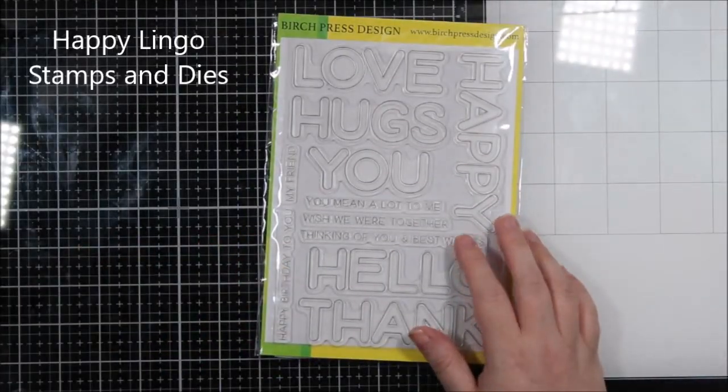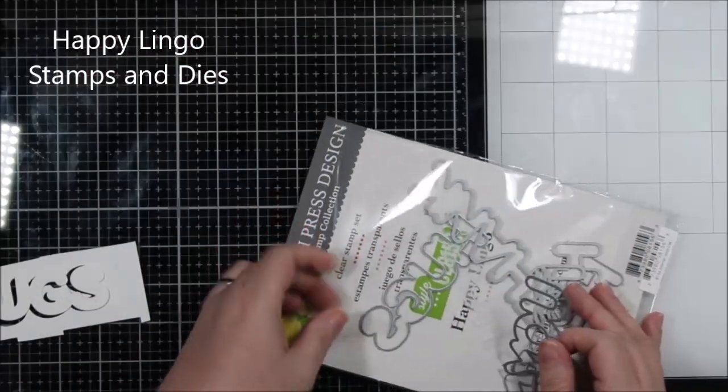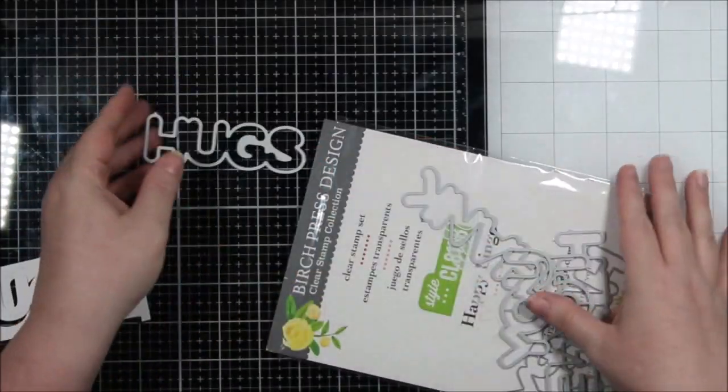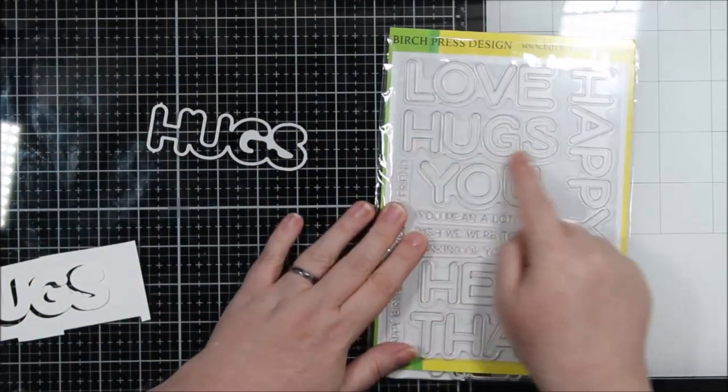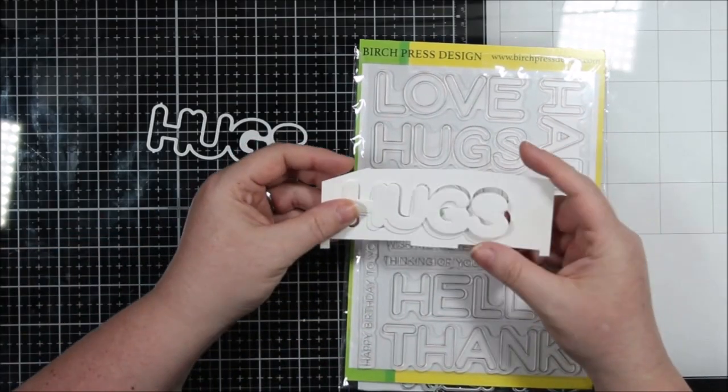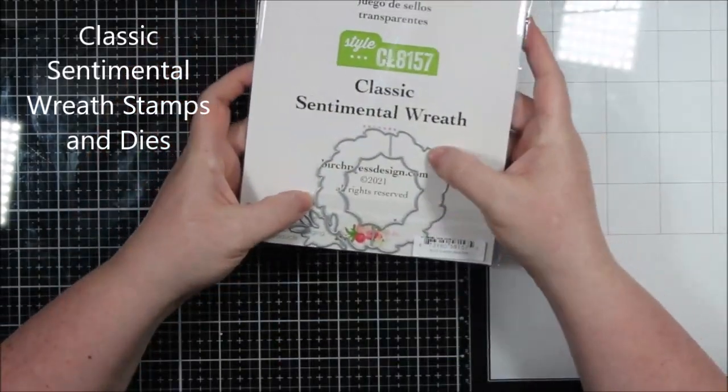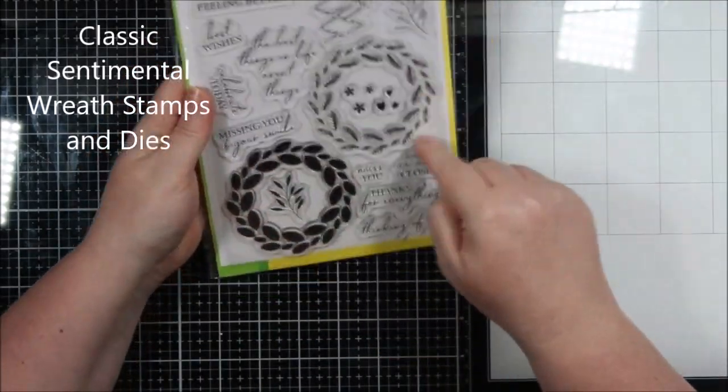Today I have a video for you using some Birch Press Design products. I'm using the Honeycomb Mini Tile Layering Set, the Happy Lingo Stamps and Dye Set, and the Classic Sentimental Wreath Stamps and Dye Set.